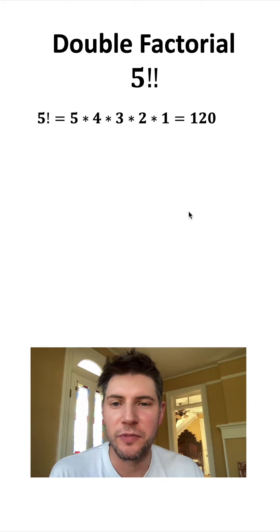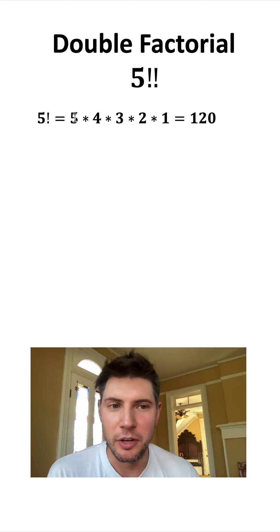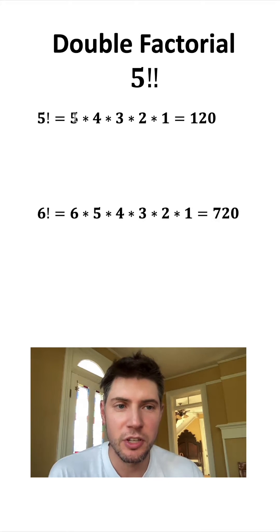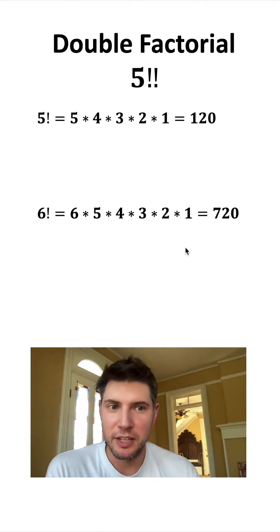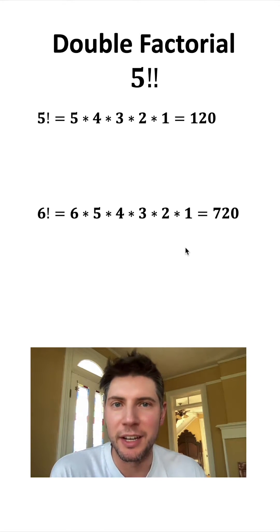Just a reminder, 5 factorial means 5 times 4 times 3 times 2 times 1. You take that number and you multiply it by all the numbers all the way down until you get to 1. So something like 6 factorial would be 6 times 5 times 4 times 3 times 2 times 1. That's if you have one factorial symbol or one exclamation mark.